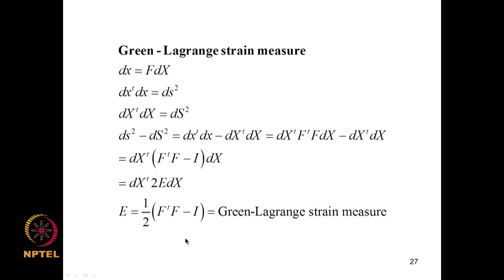Equipped with this, we introduce the Green-Lagrange strain measure. Since dx = F dX, the length |dx|² = dx^T dx in the deformed configuration and |dX|² in the original. The change in squared lengths is ds² − dS² = dX^T(F^T F − I)dX. Defining E = ½(F^T F − I), this quantity is known as the Green-Lagrange strain measure.